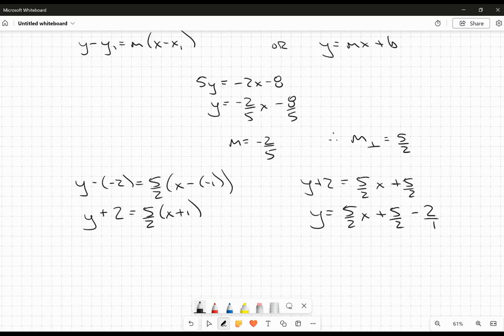So I've got a common denominator of 2. So it'll be multiply here by 2, multiply here by 2. And so y will equal 5/2 x. And then I'm going to have 5/2 - 4/2. It'll just be 1/2.